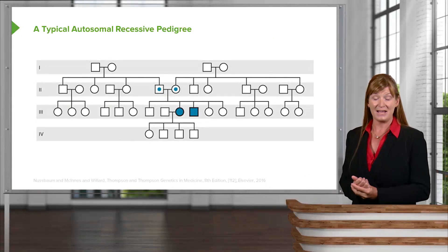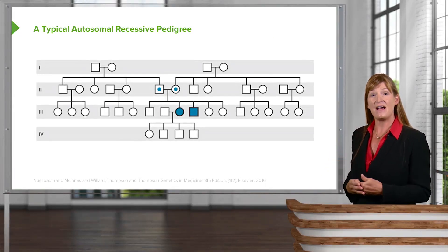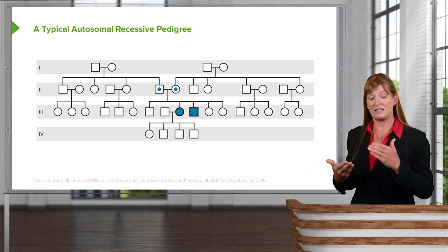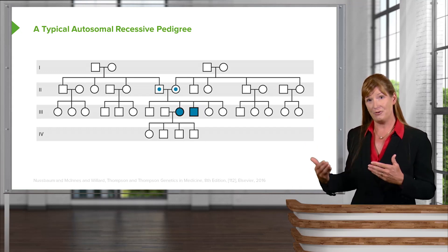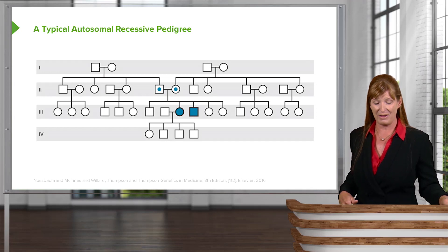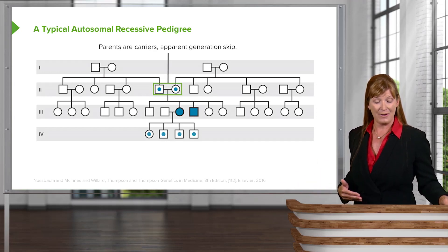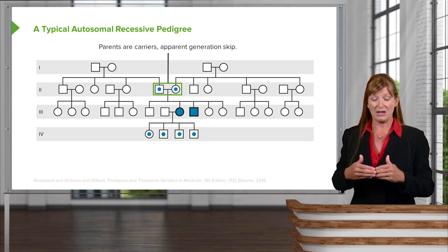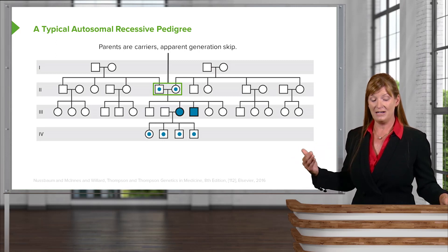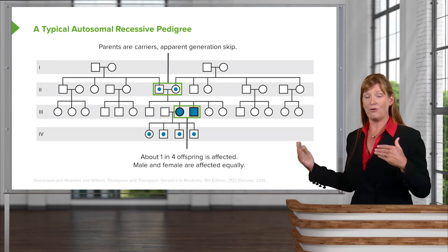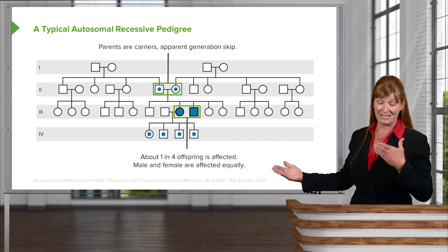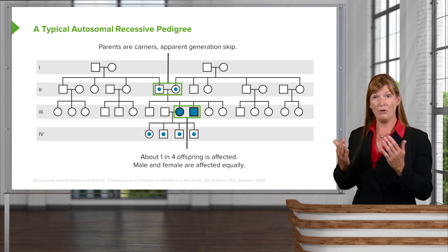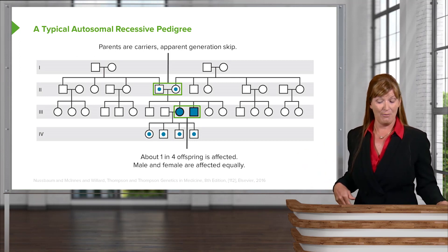Autosomal recessive pedigrees have a characteristic appearance. When you look at a pedigree, you can predict what sort of inheritance pattern it is, and then perhaps do further testing to discern precisely what the genotype behind it is. In general, what you see is both parents are carriers, and we can predict it's a recessive inheritance pattern because about one in four offspring is affected. The pedigree also shows that males and females are affected equally, so the probability could be about one in four affected.